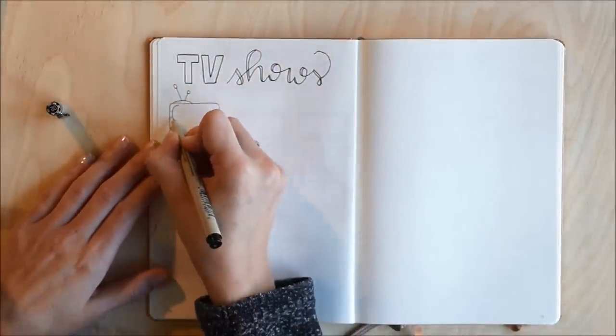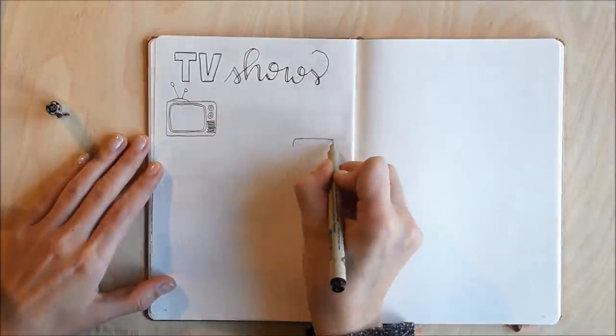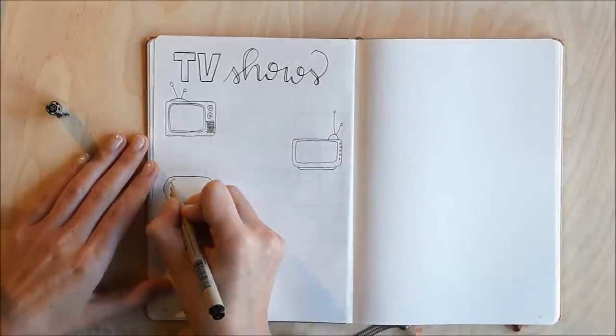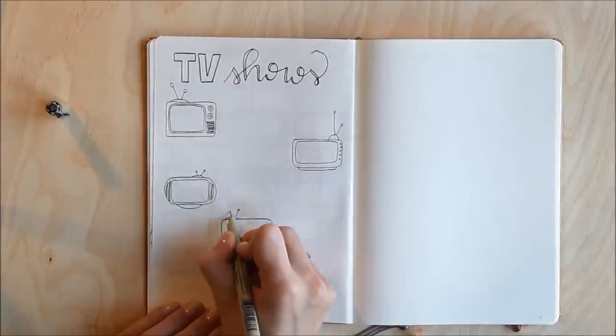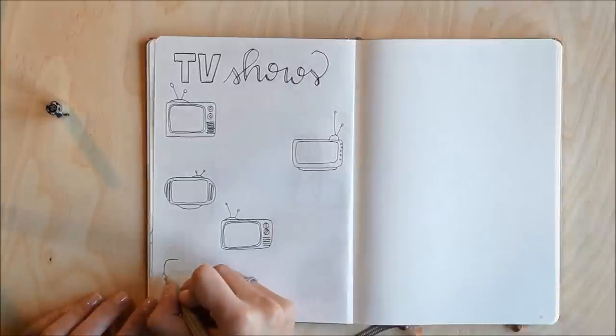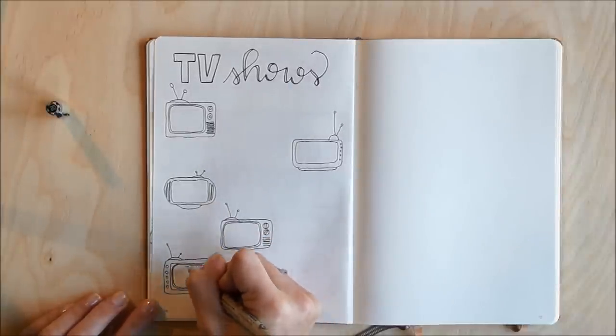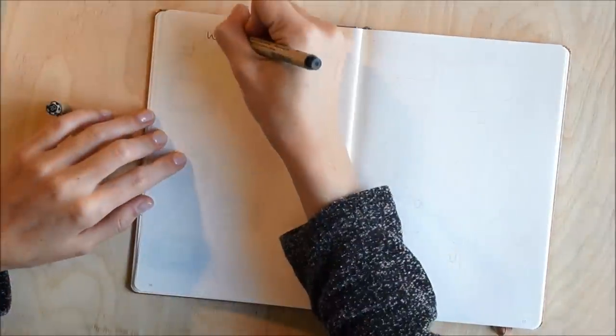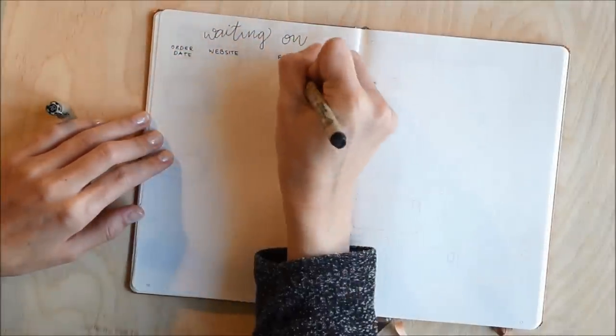Next up I wanted to have room for my TV shows. I chose to have two pages for that, but I only drew the televisions on one page because I just didn't feel like drawing anymore at this time. And I'm basically going to write down the TV show that I'm watching inside the TV and then I'm going to add in the seasons and episodes I haven't watched yet and I will be able to cross them off as I go.